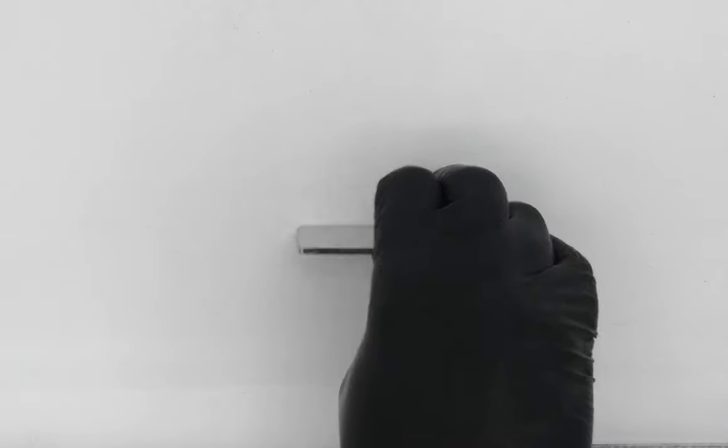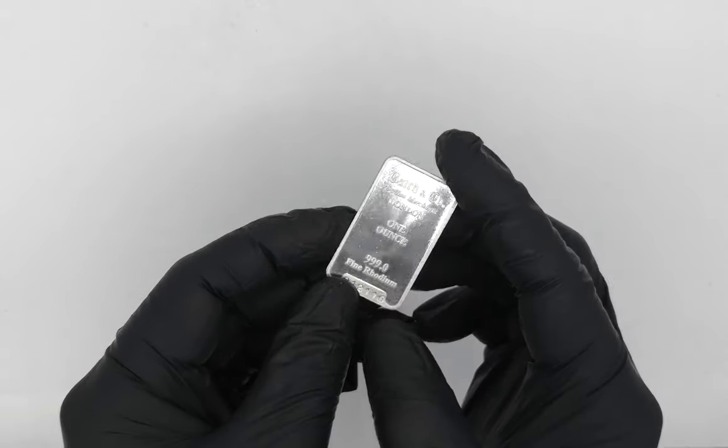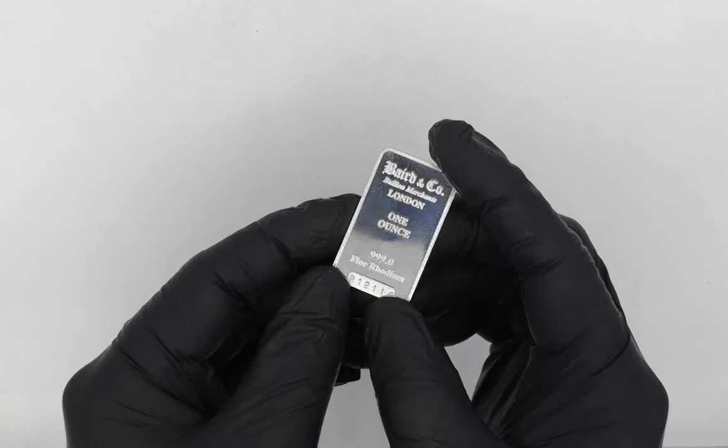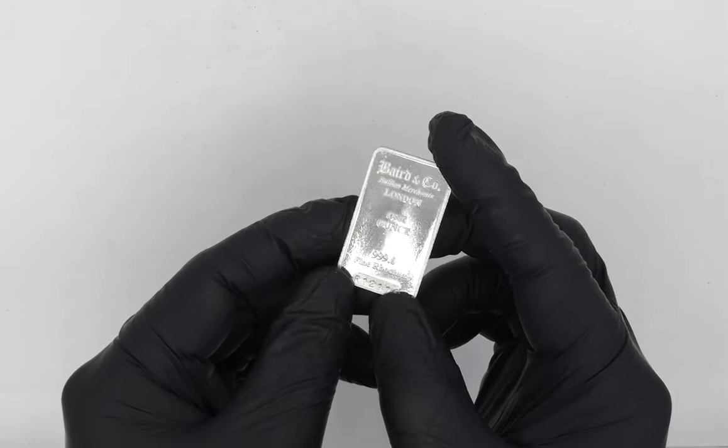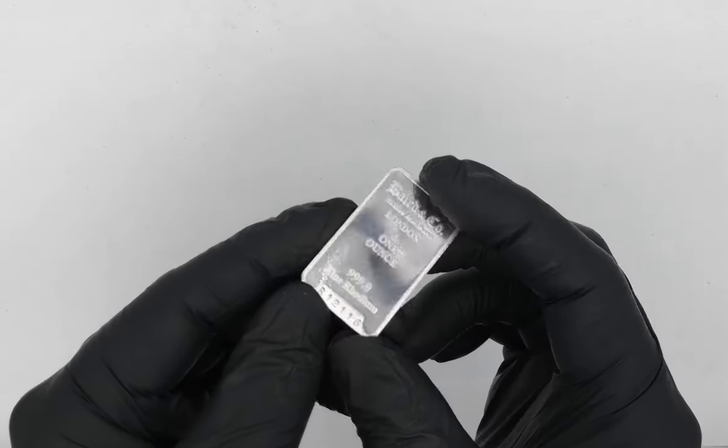Hello, you're looking at an ounce, 31 grams, of rhodium metal. This is a precious metal that is famous for being one of the most expensive metals that you can find.